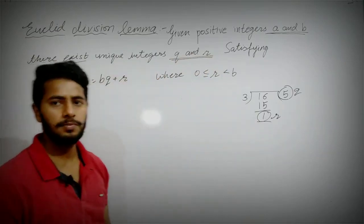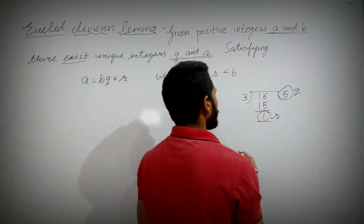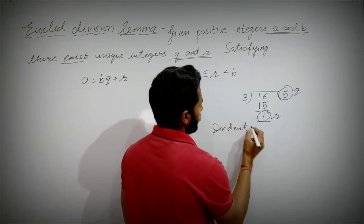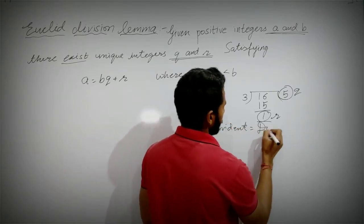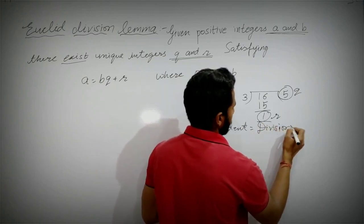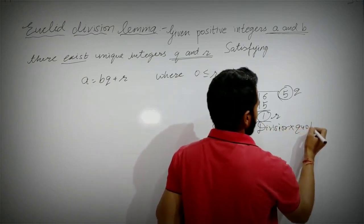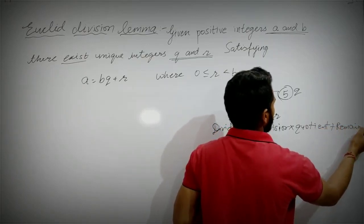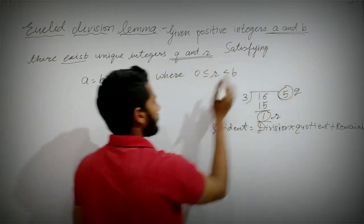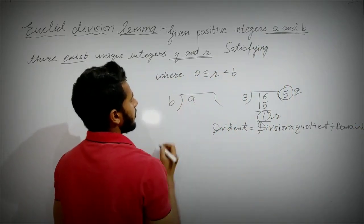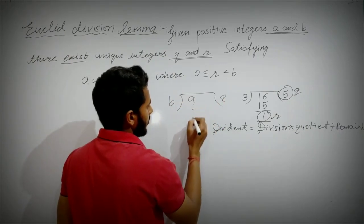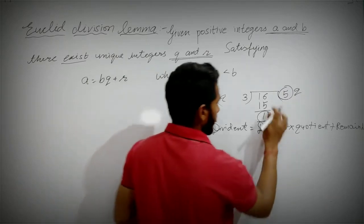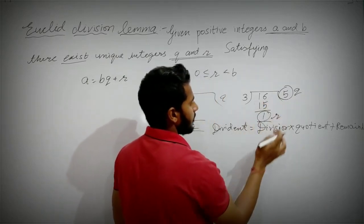Where did this condition come from? You must have read a division algorithm in lower classes: dividend = divisor × quotient + remainder. So it is based on that. We are dividing A by B, quotient Q comes, remainder R comes — according to this formula.